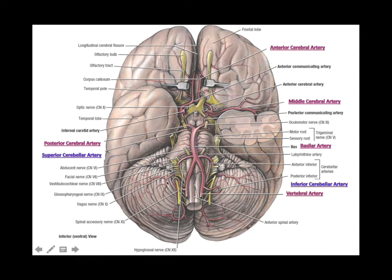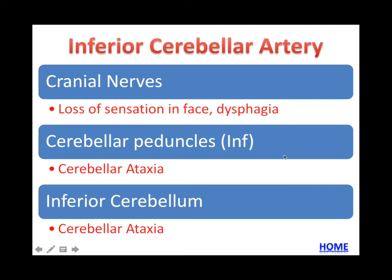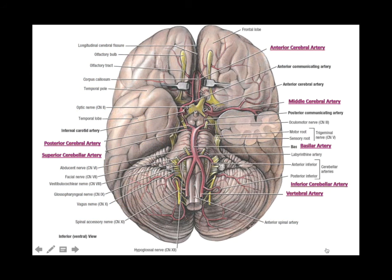Moving to the cerebellum: anything that damages the cerebellum results in a loss of coordination, which we call ataxia. If you have superior or inferior cerebellar artery damage you will ultimately have cerebellar ataxia. We'll get deeper into this with further discussions, but we also need to understand that vestibular dysfunction can arise from the vestibulocerebellar region. The inferior cerebellar artery presents a similar story of cerebellar ataxia but with additional cranial nerve infarcts causing loss of facial sensation and potentially dysphagia. Use this chart to study and confirm your knowledge of which brain regions are impacted by deficits in each artery.